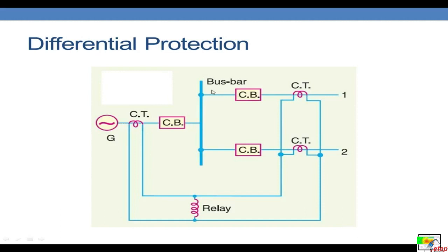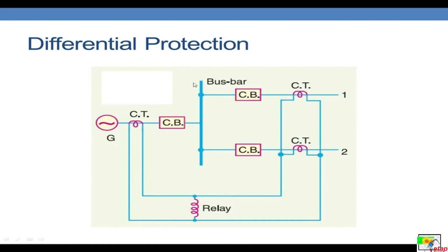If there is any unbalance between the currents incoming to a bus and outgoing from that bus, we can say there is a fault at the bus. This is the main philosophy of bus differential protection. Any unbalance in incoming and outgoing currents causes the relay to trip. The device number for the differential relay is 87. Let us go to ETAP to implement this differential protection on a bus bar.